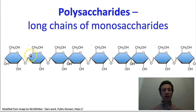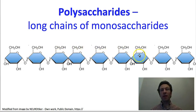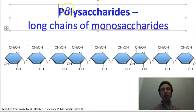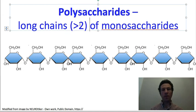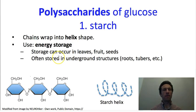Many times in the cell, instead of just having two units, we will have many repeating units. If we have more than two, we can use the term poly — if it's a sugar, it's going to be a polysaccharide. A polysaccharide is a long chain of monosaccharides; to fit the definition, it has to be more than two. We are going to talk about two important polysaccharides of glucose.